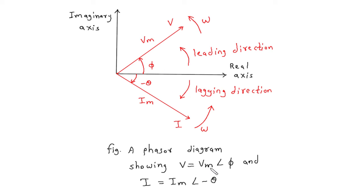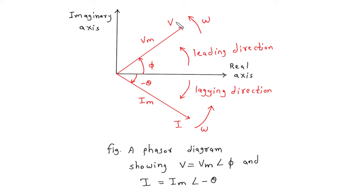So for V equal to Vm at an angle of phi — since phi is positive, it will be drawn in the leading direction. Vm will be the length of this phasor, so here Vm is the magnitude and this represents voltage V.